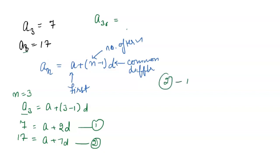Now subtract equation 1 from equation 2. We will get 17 minus 7 equals A plus 7D minus A plus 2D. Further simplify this.